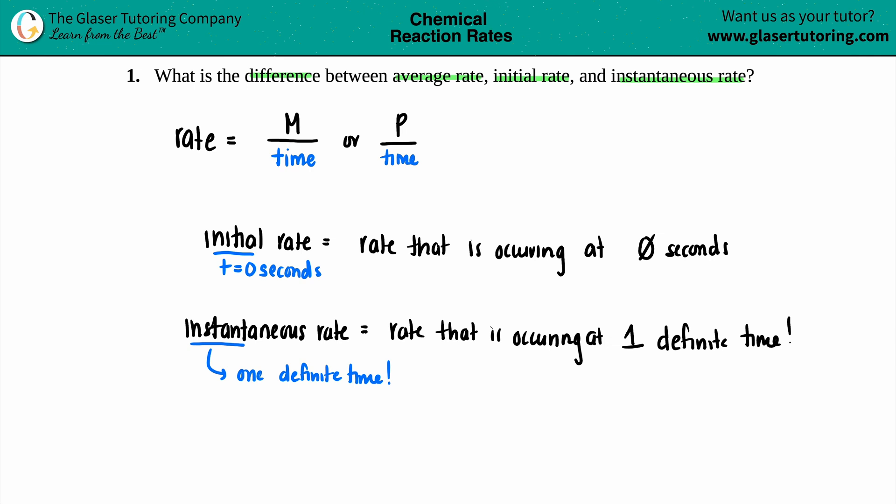And basically, an initial rate is an instantaneous rate. But the only difference is that it's specifically at zero seconds. That's the definite one time. So that's why they call it a different thing, they call it initial rate. But any other rate that's occurring at one specific time, that's an instantaneous rate.